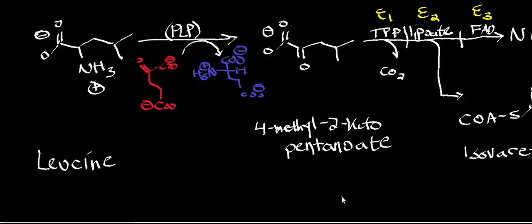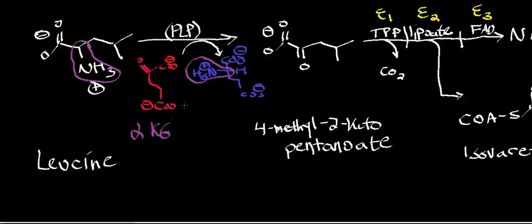So we're going to start with leucine, and just like in the case of valine, we're going to start with the two same enzymes: branched-chain transaminase and branched-chain alpha-ketoacid dehydrogenase complex. Notice that on our leucine we have our alpha-amine, and you can effectively think of transaminase reactions as substitutions between amines and carbonyls. That alpha-amine is going to end up as the alpha-amine on glutamate, using alpha-ketoglutarate. It's a pyridoxal phosphate-dependent enzyme, just like all transaminases are.